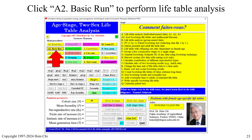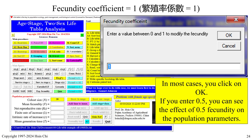Next, click on A2 Basic Run to perform the life table analysis. You will see a Fecundity Coefficient message. If you don't need to lower the fecundity, click OK to use 1. If you enter 0.5, you will see the effect of 0.5 fecundity on the population parameters.